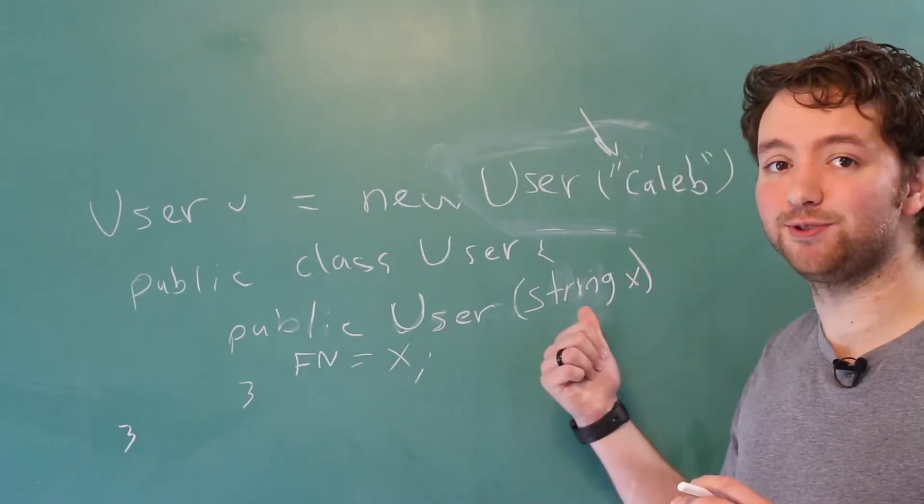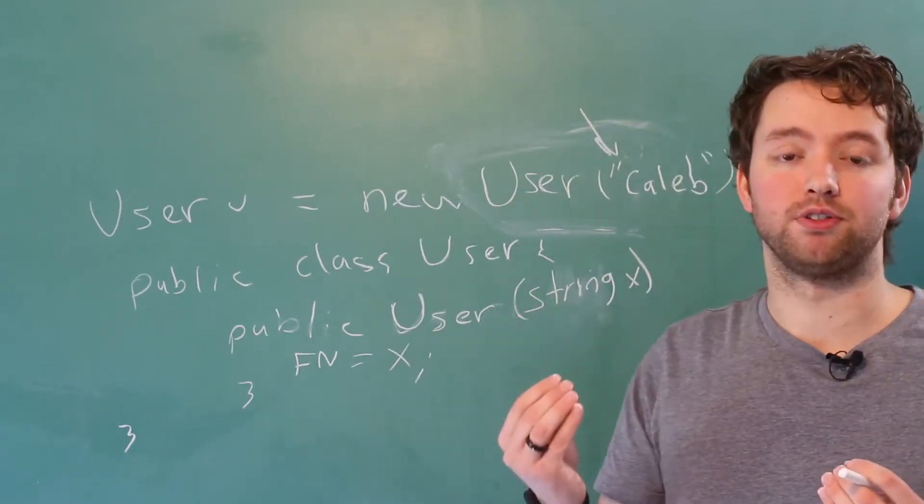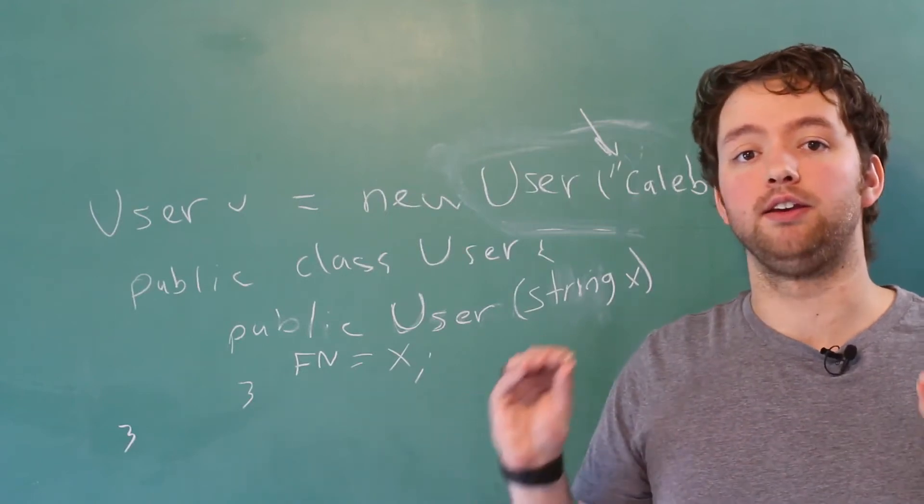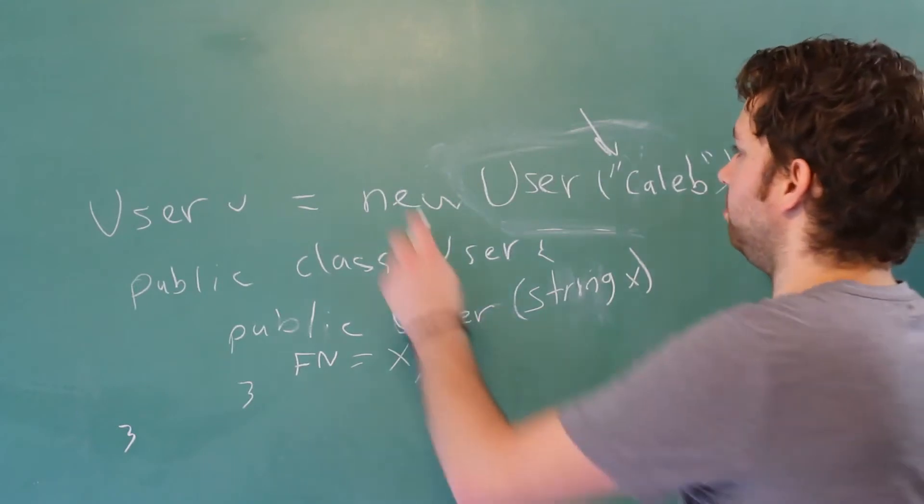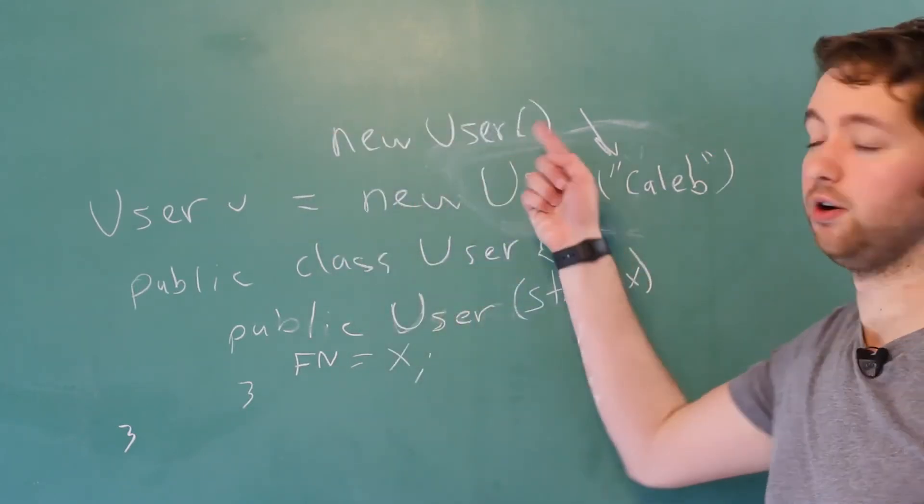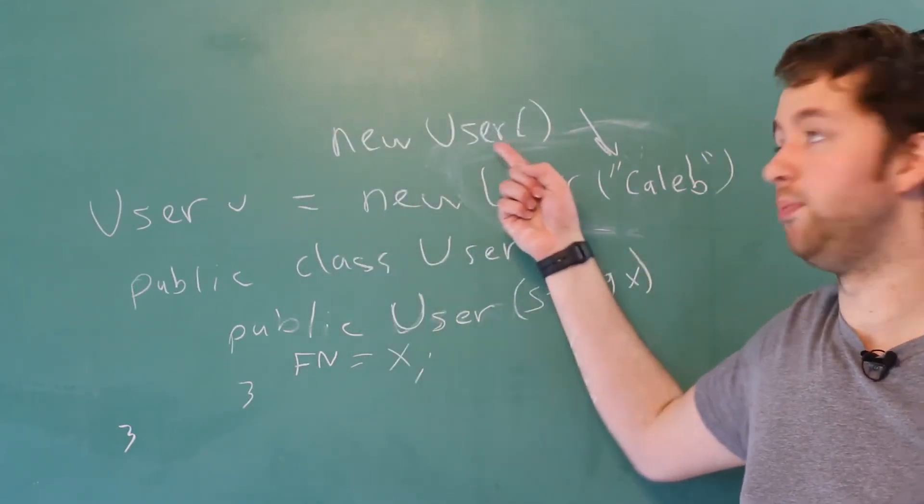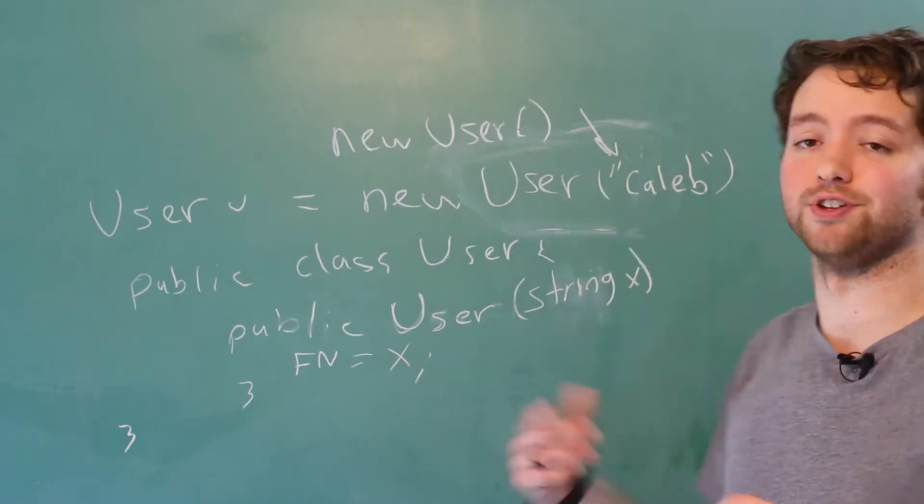But if we create a custom constructor that requires those things and we do not create that default constructor, then it's required because you will not be able to just do new user like so. This will give you a compiling error because this user constructor is not going to exist.